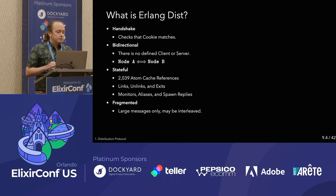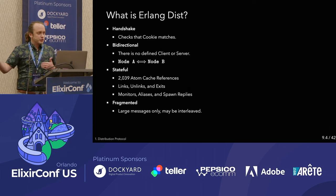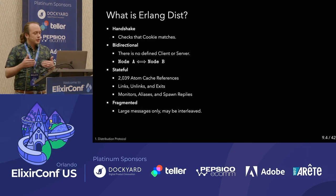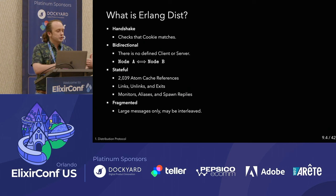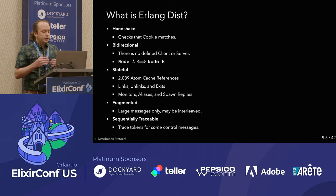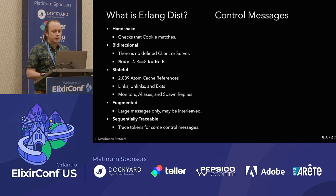The protocol is also fragmented — if you're sending a very large message over 64 kilobytes, it will break it up into 64-kilobyte chunks, allowing you to send a large message without blocking other smaller messages. It's also sequentially traceable, so trace tokens are supported for most control messages, but not all of them.